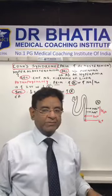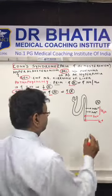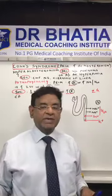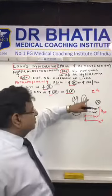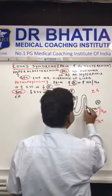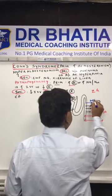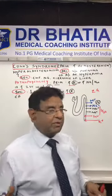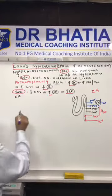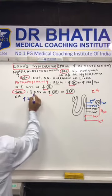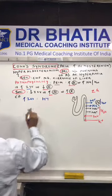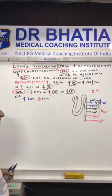In Conn's syndrome, which is a tumor of the zona glomerulosa — the outermost layer of the adrenal cortex that primarily secretes aldosterone — the patient will be absorbing excess sodium. Normally suppose two sodium are absorbed; here four sodium are absorbed along with water. This leads clinically to hypertension, which is the primary clinical feature in these patients.